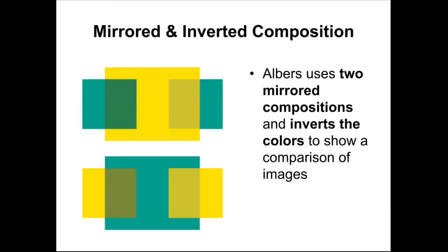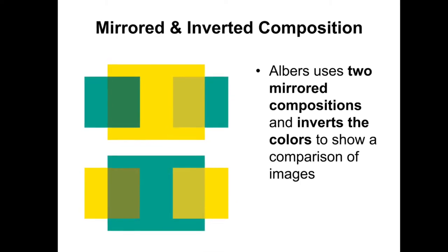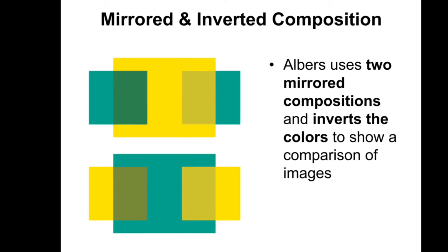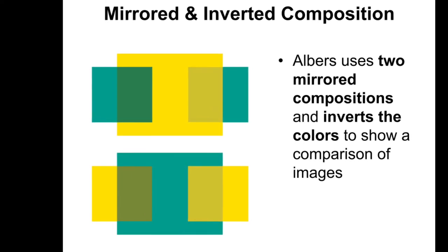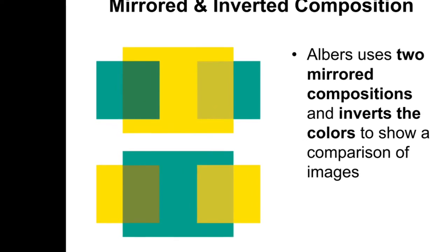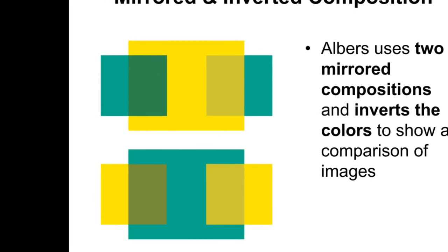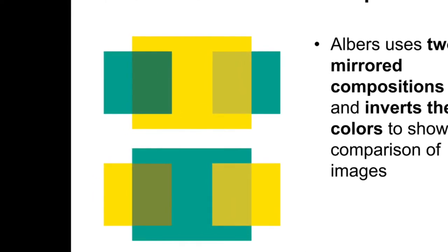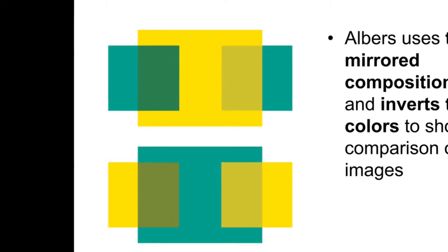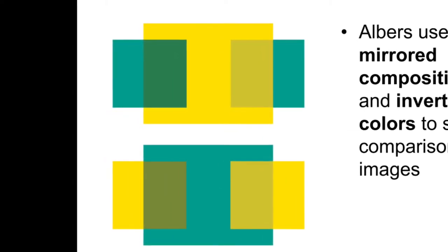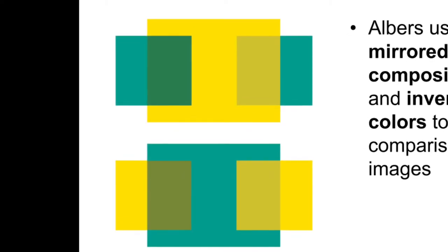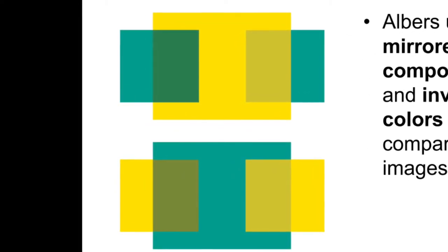Finally, he used mirrored and inverted compositions. If you look at these two examples here, you'll notice that there's the exact same number of squares: two small squares on the outside and one large one on the inside. What is different, however, are the colors that fill in these squares. The top square is yellow in the center and the two outside squares are blue, but the bottom square is inverted or flipped — the large center square is blue and the outside squares are yellow. So although he used the exact same composition and the exact same colors, he's flipped those in both examples.